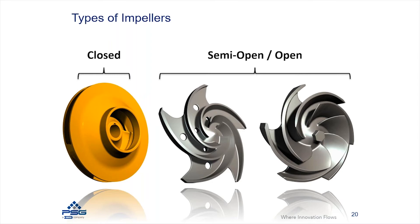With that said, over time the internal flow path is going to wear away, particularly if you're using abrasives or you've got chemical corrosion or chemical attack going on. The internal flow path will start to change over time and that will cause one of these impellers to have a performance decline over its life.